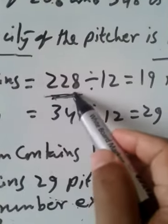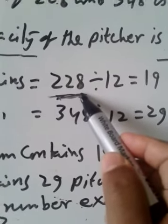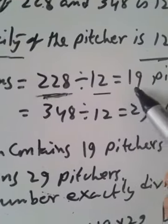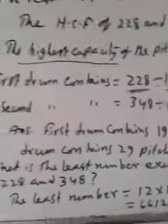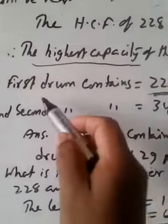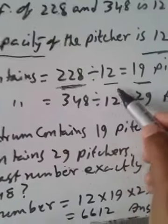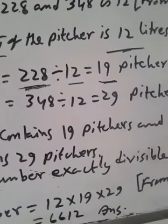So, first drum contains 228 litre, we have to divide by 12, then we will get 19 pitchers. It means, first drum contains 228 divided by 12, 19 pitchers.